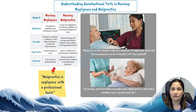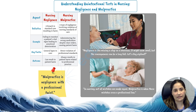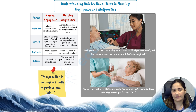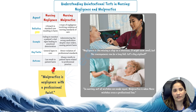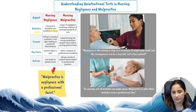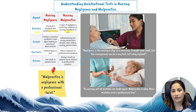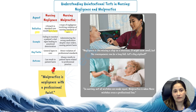Now we are delving into unintentional torts, specifically focusing on negligence and malpractice. These concepts are crucial in nursing as they involve harm caused not by intent but by oversight or failure to meet the standards of care. Negligence in nursing happens when a nurse fails to take reasonable care or makes an error that a competent nurse would not have made under similar circumstances. Malpractice is a type of negligence that occurs when this lack of care directly violates professional nursing standards, causing harm to a patient. Both involve unintentional harm, but malpractice is tied to the professional duties of a nurse.